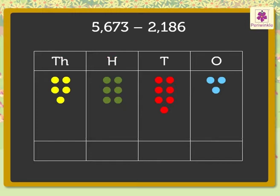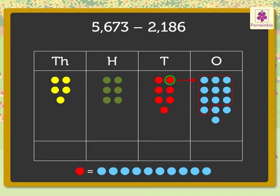Look! There are only 3 blue dots in the ones column and we need to cancel 6 blue dots. We cannot subtract 6 from 3. So, we regroup 1 ten to 10 ones.